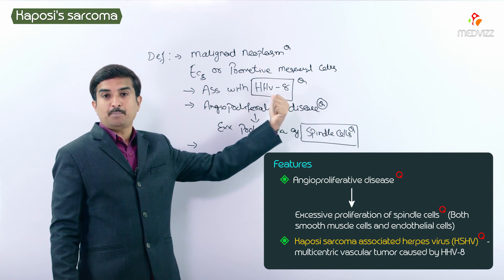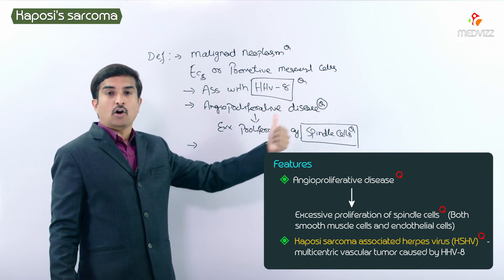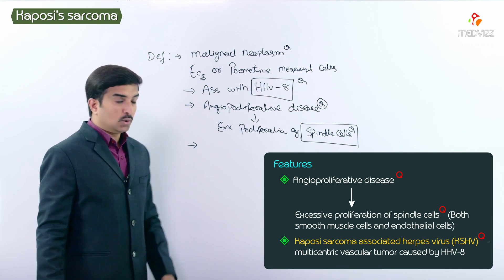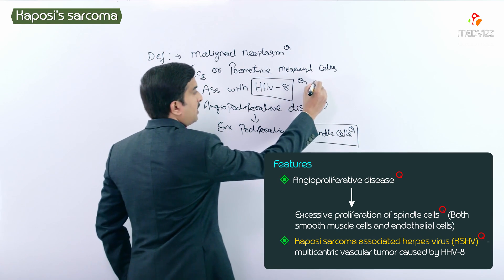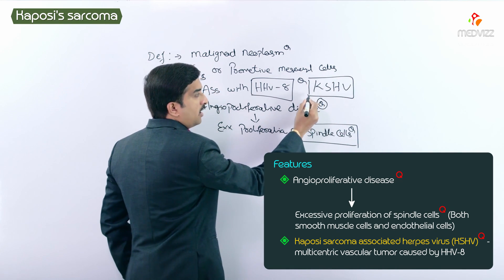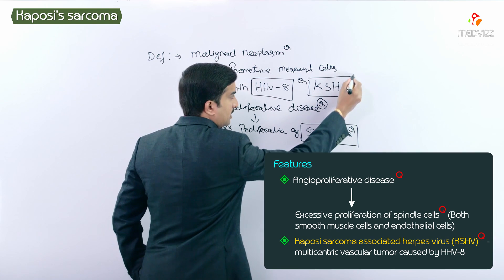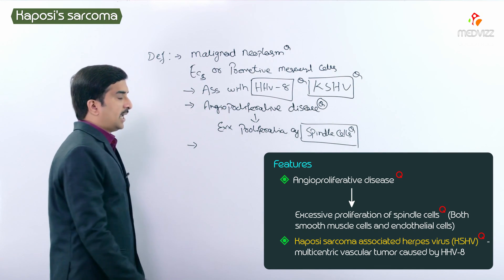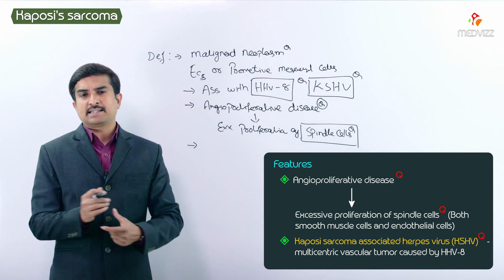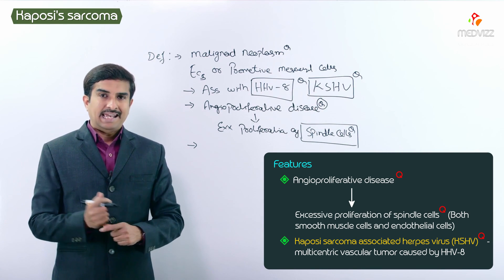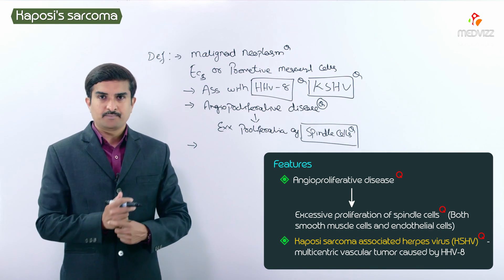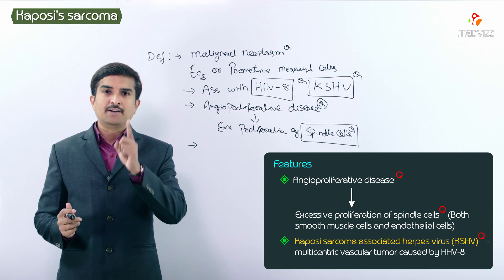It is a multicentric vascular tumor caused by human herpesvirus 8, also called Kaposi sarcoma-associated herpesvirus (KSHV). Whenever we discuss Kaposi sarcoma from an examination point of view, they will ask you how it is associated with AIDS.